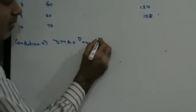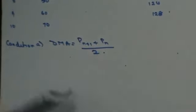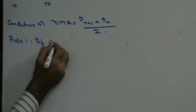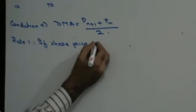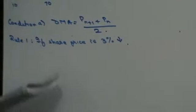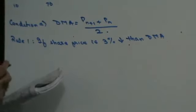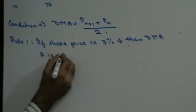Now they've given you the rules of share market. Condition 1: the daily moving average is given by the formula — price on (N+1)th day plus price on Nth day divided by 2. Rule 1 says that if the share price is 3% lower than DMA, then it is a sell signal.